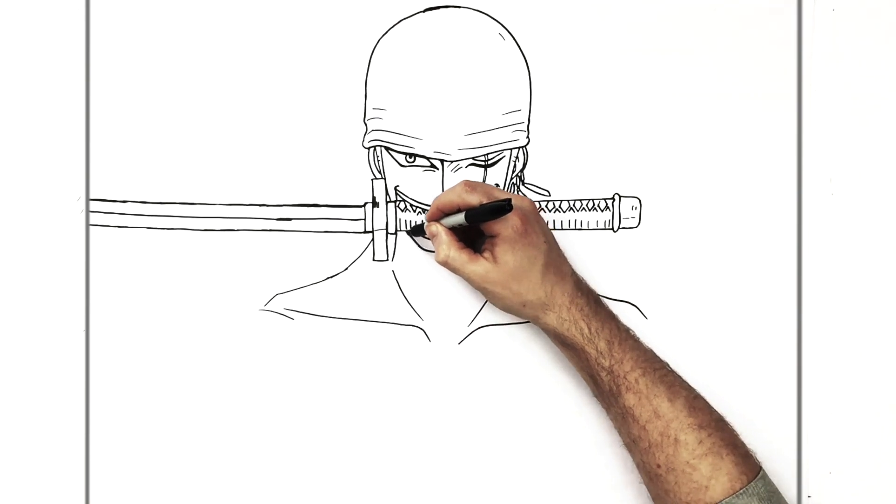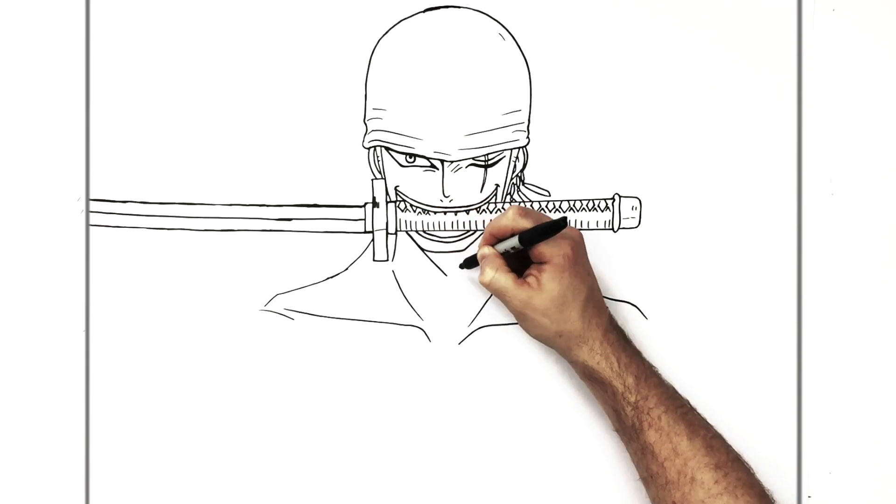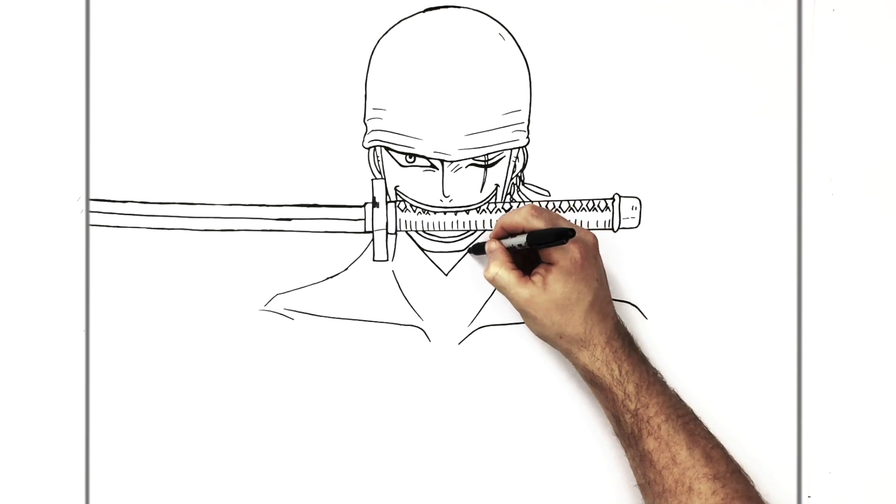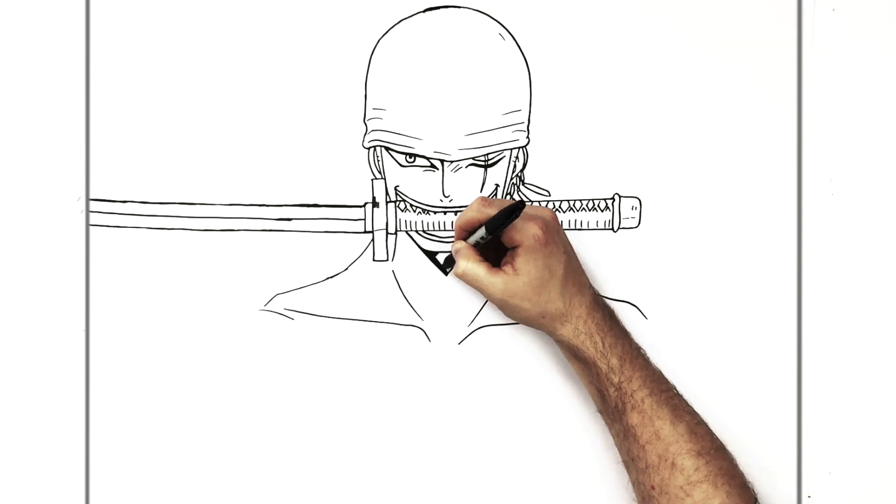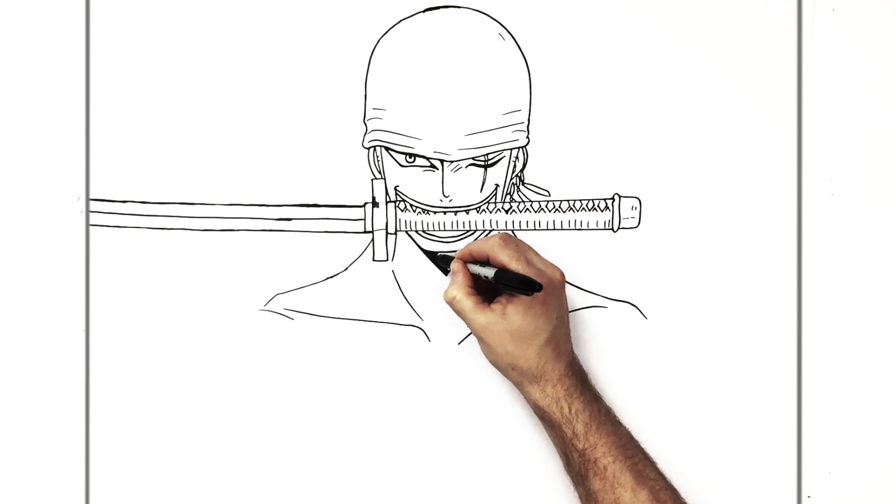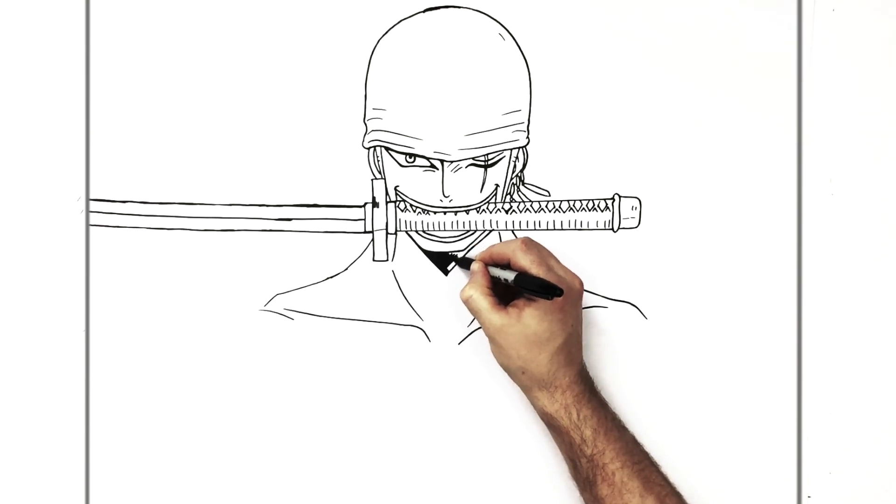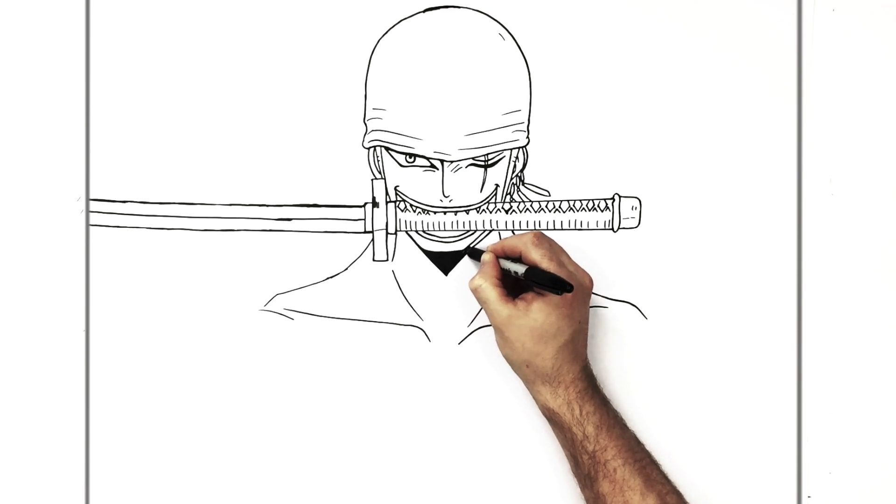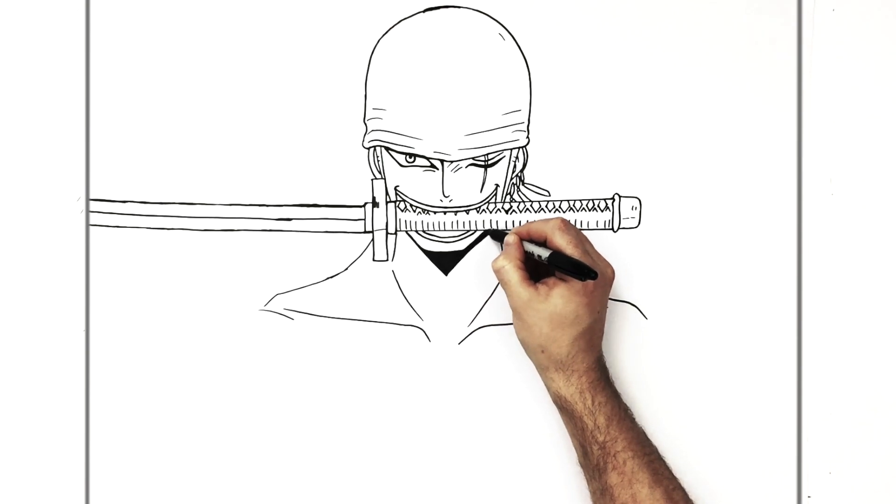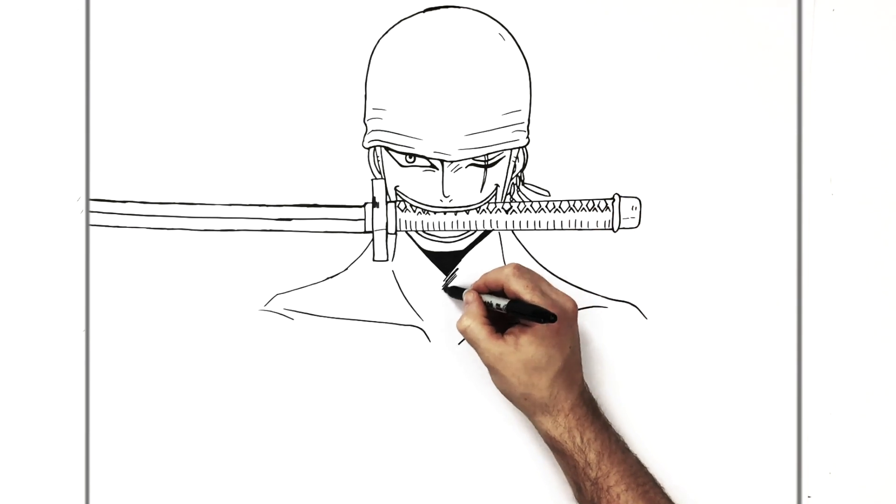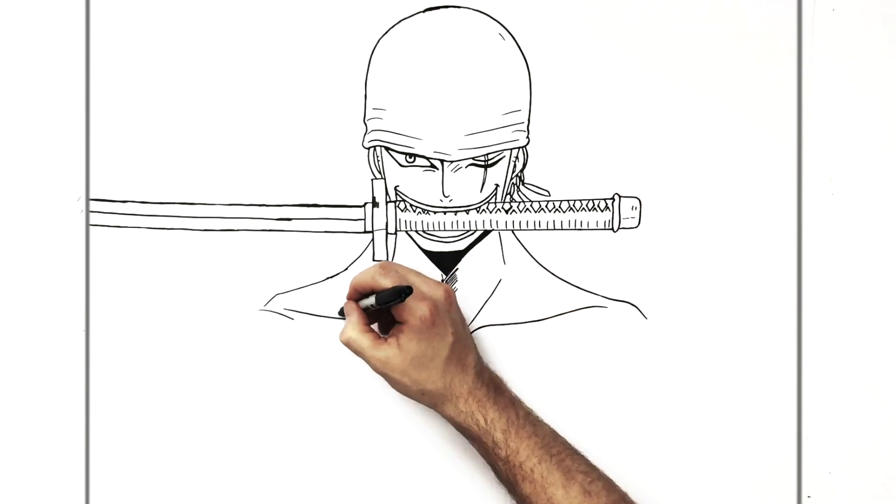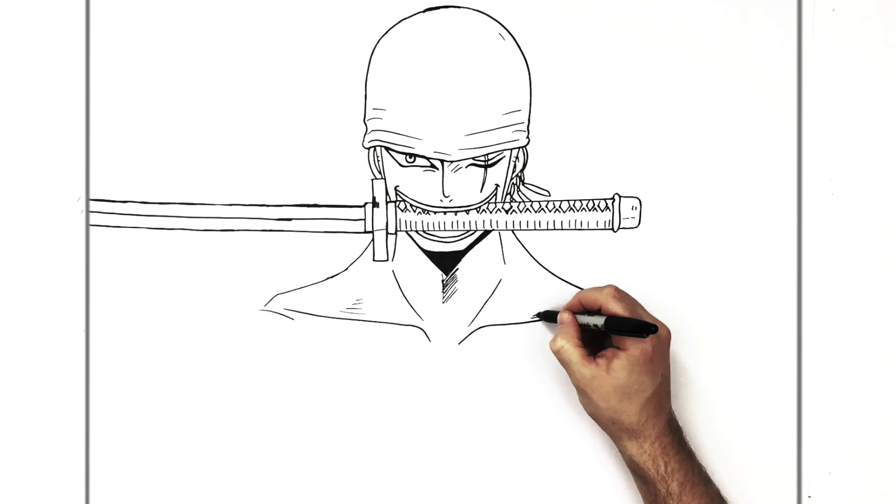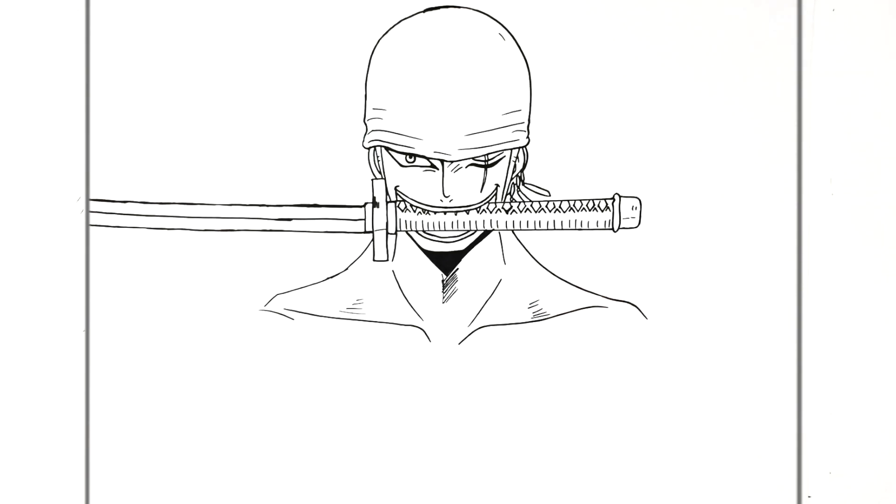And he's got a shadow underneath his chin as well. So we'll just shade that in. Some hatching just coming down there, like so. And there might be some hatching just here. There.